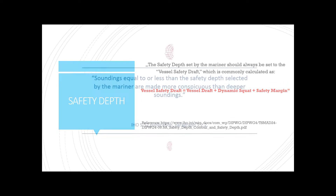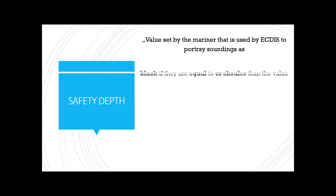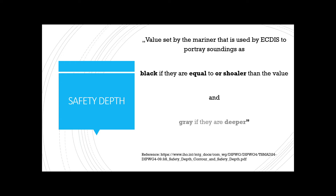ECDIS will mark the dangerous depth according to the requirements of the IHO, which says that soundings equal to or smaller than the value of safety depth should be more conspicuous than deeper soundings. In practice, soundings shallower than or equal to safety depth are bold or simply black on the chart, while soundings deeper than the set safety depth remain gray.